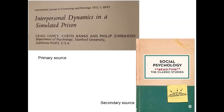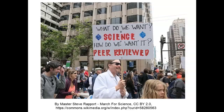Always check with your instructor to determine what types of resources are required for a particular assignment. In many psychology courses, you will be asked to find journal articles so that you get your information from the original research report as opposed to someone else's later interpretation of it. Another reason to rely on scholarly journals is that many are peer-reviewed, meaning their articles have been evaluated by outside experts before being accepted for publication, which produces a high level of quality.